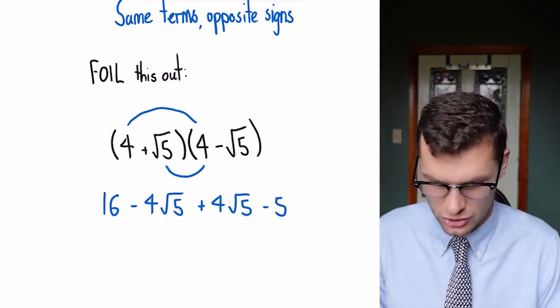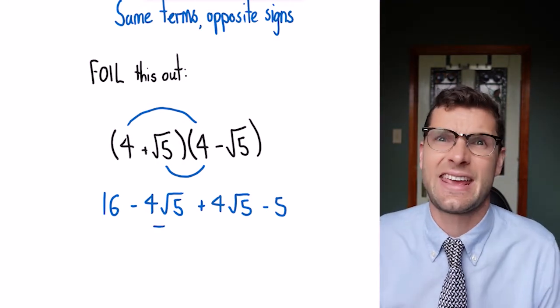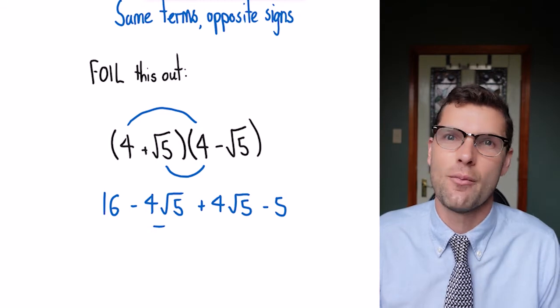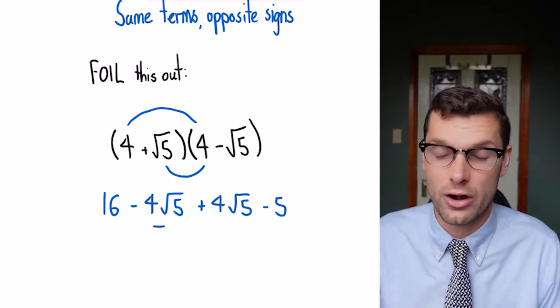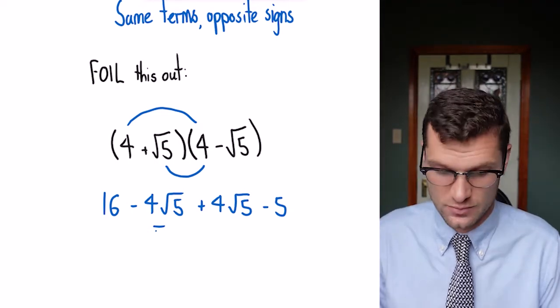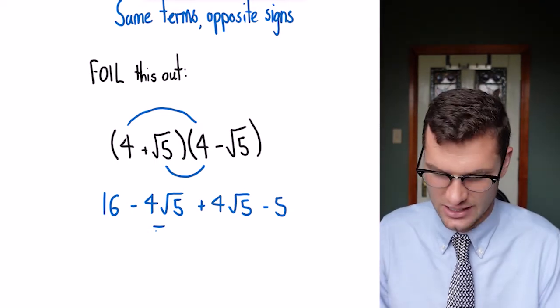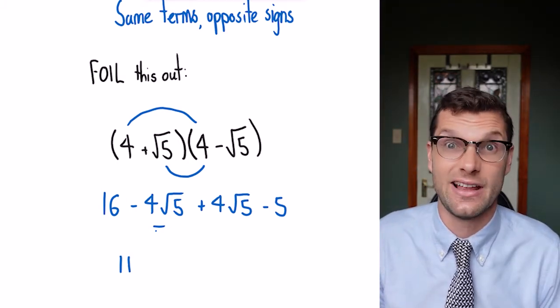You'll see here that the middle two terms, minus 4√5 and plus 4√5, just cancel each other out. That's like having minus 2 plus 2. All we've got to do here is collect those like terms at the start and end. So 16 minus 5 is equal to 11, and that's my final answer.